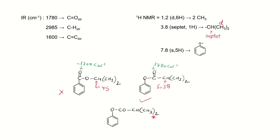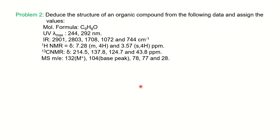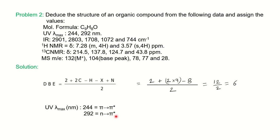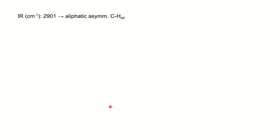We'll now solve a second problem from a previous year where all data is given: UV, IR, proton NMR, 13C NMR, and mass along with the molecular formula. When you have more data, you have more help identifying the structure. The DBE comes out to 6. The UV data shows 244 nm (π→π* transition) and 292 nm (n→π* transition) — both are present because the molecule contains oxygen, so lone pairs are available. IR shows 2901 cm⁻¹ for aliphatic asymmetric C–H stretching and 2803 cm⁻¹ for symmetric C–H stretching.